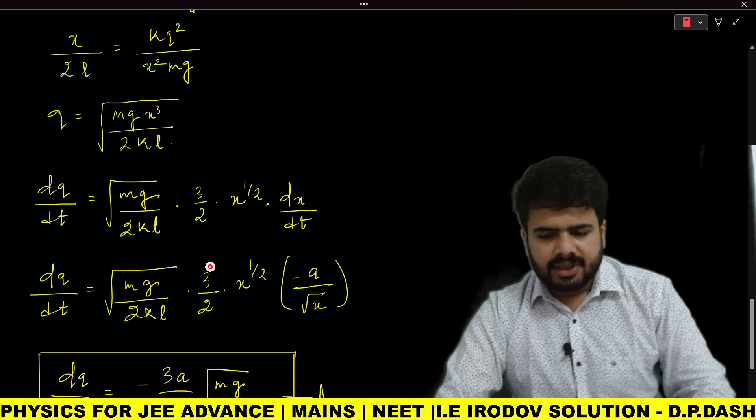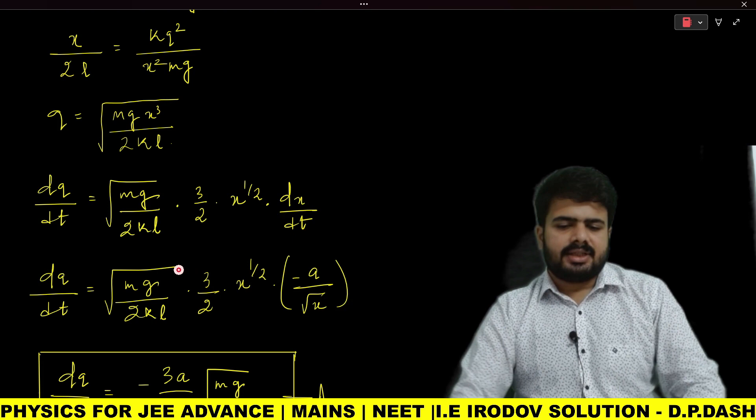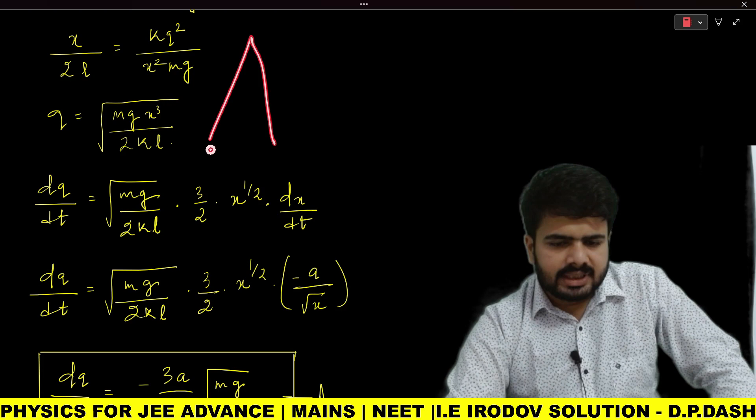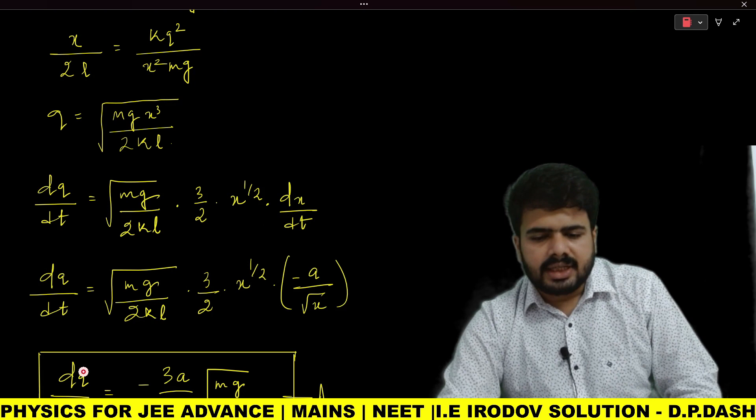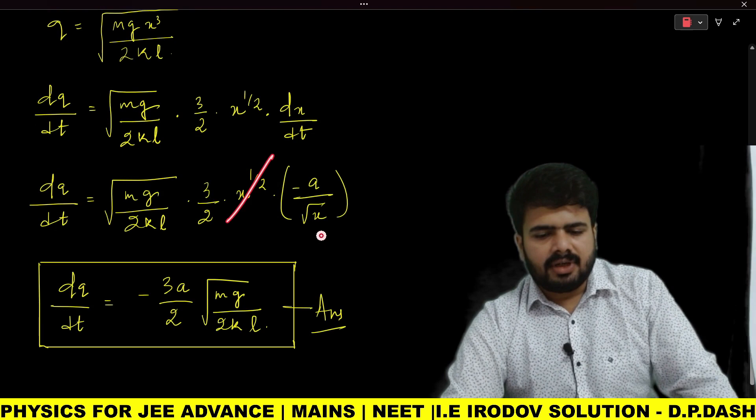In place of dx/dt, we write v, and in the question they have given v = a/√x. I am writing minus here because with the passage of time, the value of x is decreasing. So we substitute -a/√x. Now you can cancel x^(1/2) and √x.